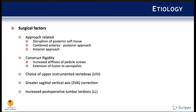Combined anterior and posterior approach has literature supporting that PJK is three times more likely to develop compared to a posterior-only approach. Anterior-only approach has also been implicated. Construct rigidity is another factor: increasing pedicle screw stiffness, extension of fusion down to the sacral pelvis, and choice of upper instrumented vertebrae all contribute. Greater SVA correction has literature supporting age-related correction — older patients may not need correction to zero — and increasing post-operative lumbar lordosis is also a factor.